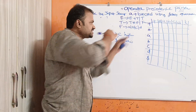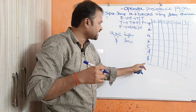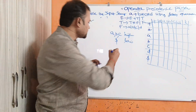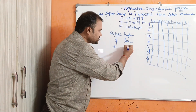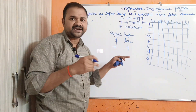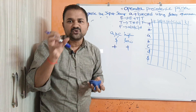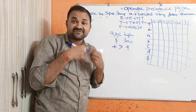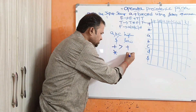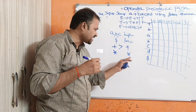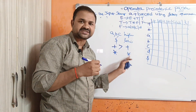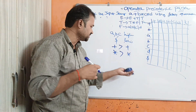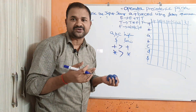Now let us fill the table. Plus and plus: more preference to the left plus, so greater than. Plus and star: star has higher priority, so plus is less than star. Plus and A: A has higher priority, less than. Plus and B, C, D: each has higher priority, less than. Plus and dollar: plus has higher priority, greater than. Star and plus: star has higher priority, greater than. Star and star: star is left associative so greater than. Star and A, B, C, D: each identifier has higher priority, less than. Star and dollar: star has higher priority, greater than. Variables cannot be compared with other variables — write hyphen. A, B, C, D and dollar: identifier has higher priority, greater than. Dollar and dollar: this is the acceptance state.